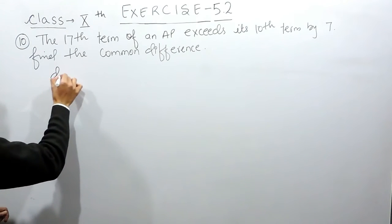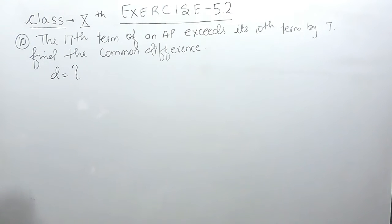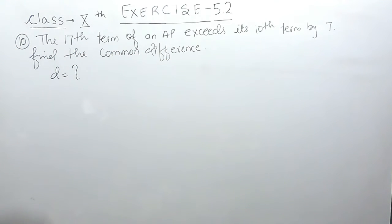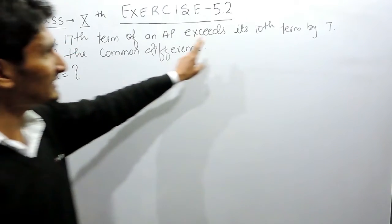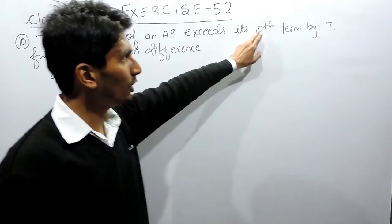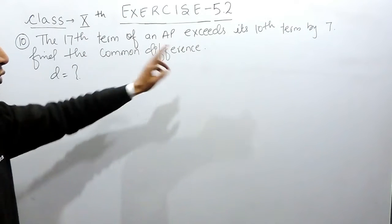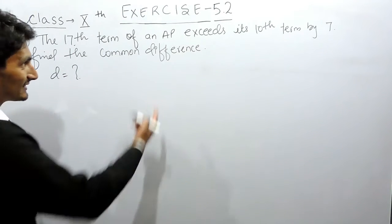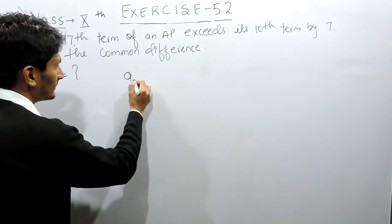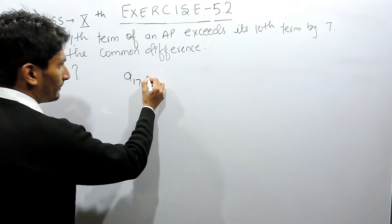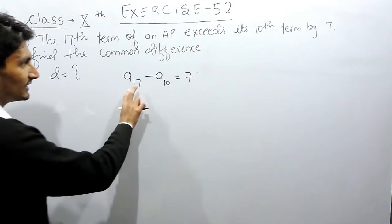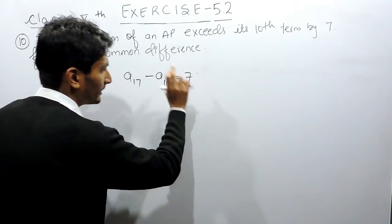So here you have to find the value of D. The 17th term exceeds its 10th term by 7, which means the 17th term will be 7 more than the 10th term, or the difference between these two terms equals 7.